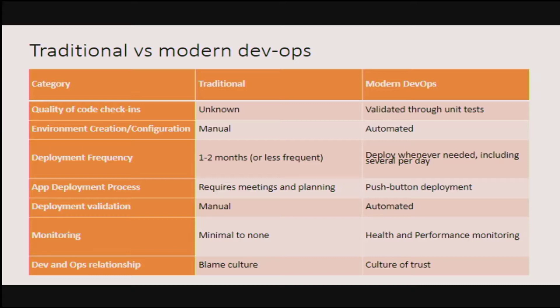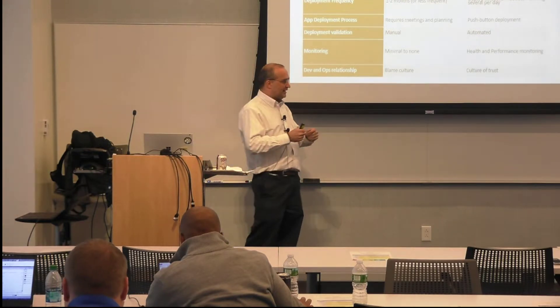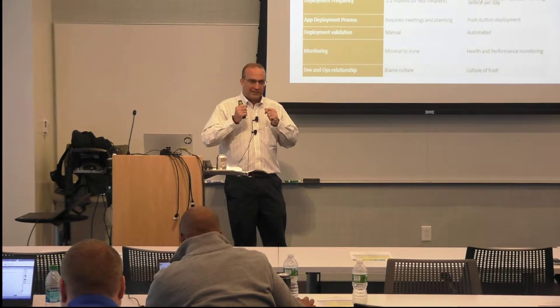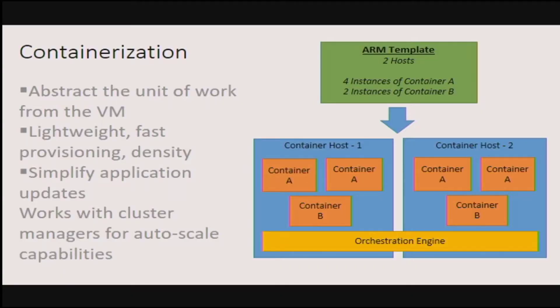Traditional versus modern DevOps: on the traditional side, literally months to do things. Modern DevOps: speed of the cloud, happens automatically. It's a culture of trust versus a culture of blame. 'Not my problem — it's the DBA's problem. Not my problem — it's the developer's problem. The hardware IT is giving us is crap.' Everybody pointing the finger somewhere else — that's the blame culture. DevOps is a culture of trust where everyone understands their job is not just to get it working in dev and test, but to ensure it runs flawlessly in production. It's everybody's job.